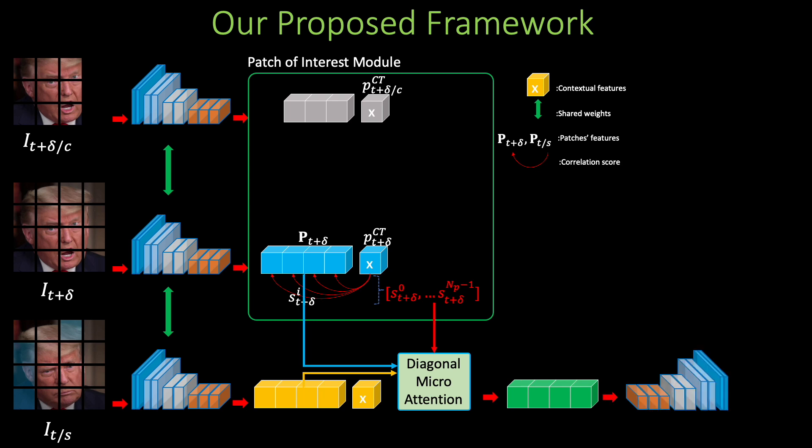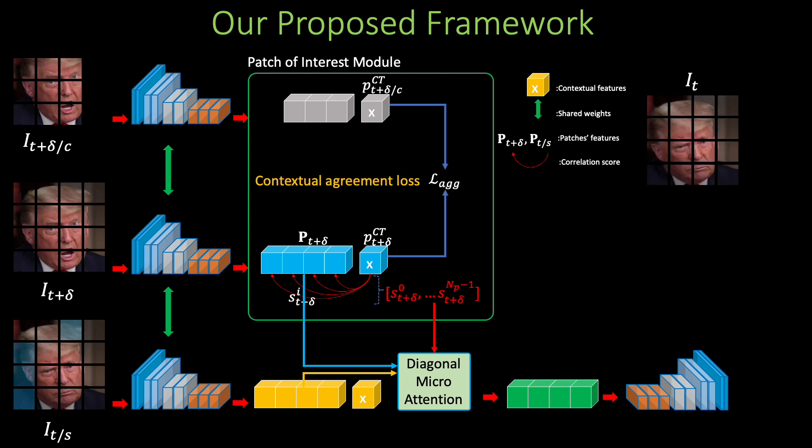Micron BERT also contains a vision transformer decoder which is used to reconstruct the original image from the swapped image efficiently. The model is optimized by reconstruction and contextual agreement loss.